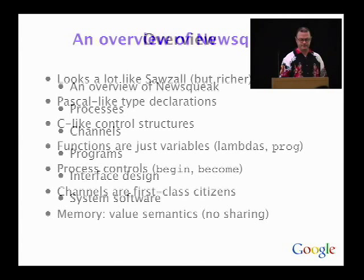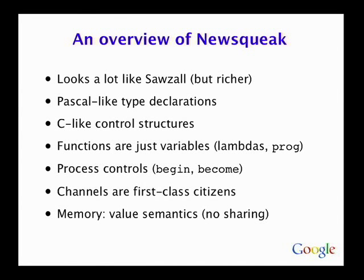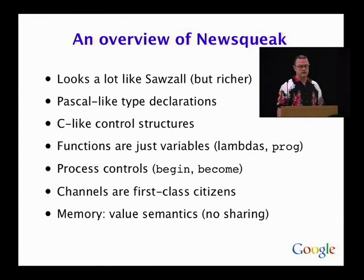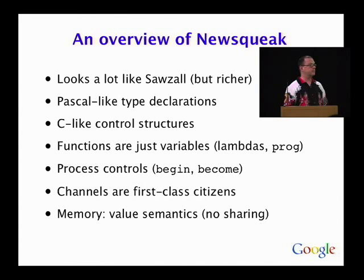An overview of NewSqueak. If you've used Sawzall, the syntax will be very familiar — that's not a coincidence. But NewSqueak is a much richer language with a more interesting semantics, and the whole concurrency and communication stuff is absent from Sawzall but is the whole point of NewSqueak. To a rough approximation it looks like C with Pascal declarations, but it's not C-like because it's got functions as lambdas. It has process management built in, and channels — which are first-class citizens — plus control structures for doing interesting things with channels.